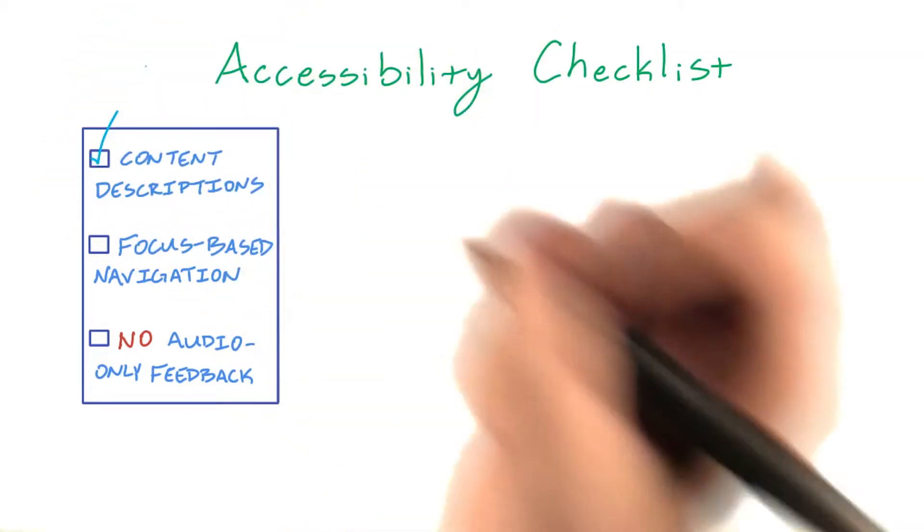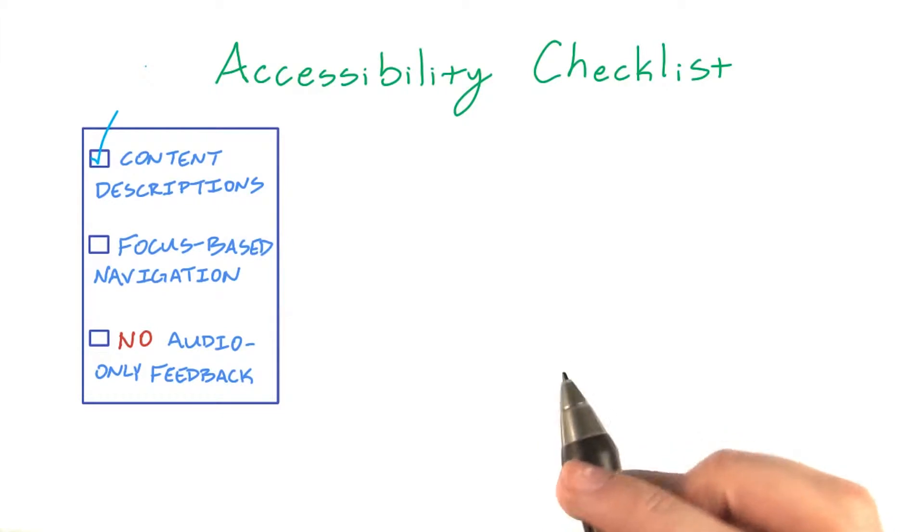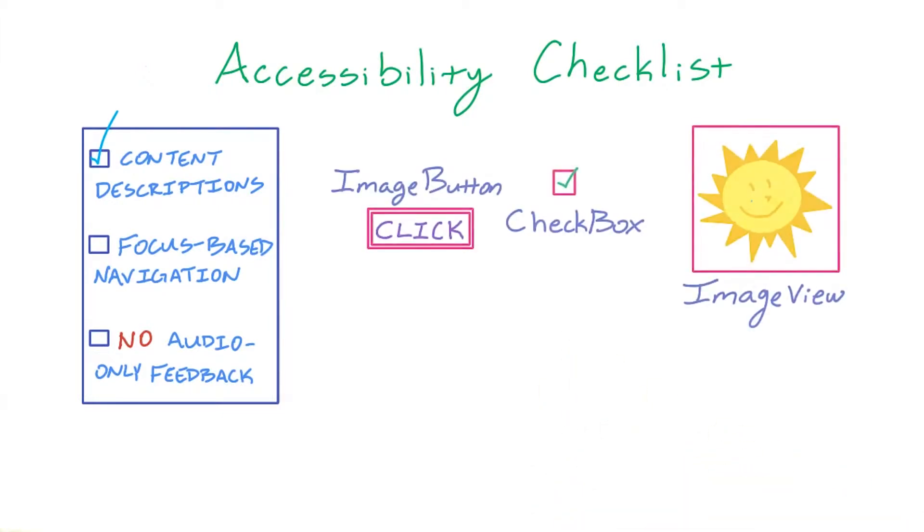First, you need to provide content descriptions for user interface components that do not have visible text. This is most important for buttons, checkboxes, and images because these components often influence the flow of the app.